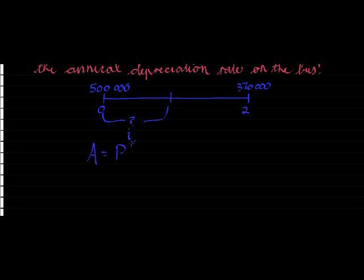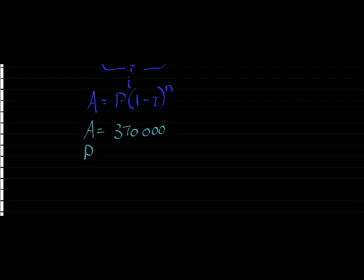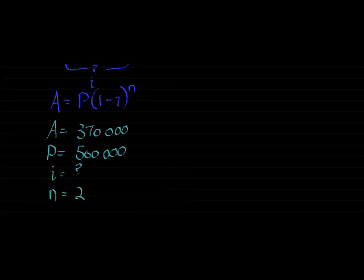So, using our formula, and they told us we should calculate it for the reducing balance method. We find that our future value is 370,000. Our principal value is 500,000. Our rate is what we are looking for, and our number of times in which it is depreciated is 2. It was depreciated over 2 years, so it's 2 times. Now, putting this into our formula, gives us 370,000 = 500,000(1 - i)^2.